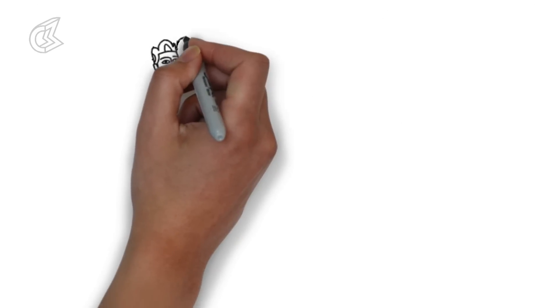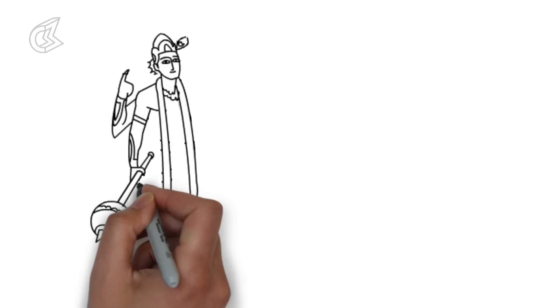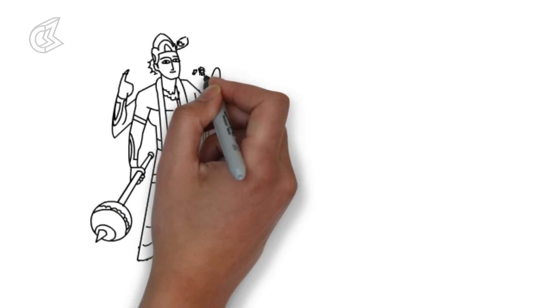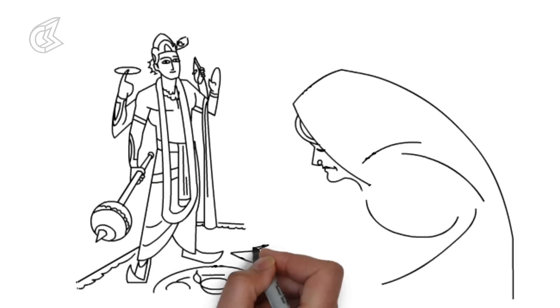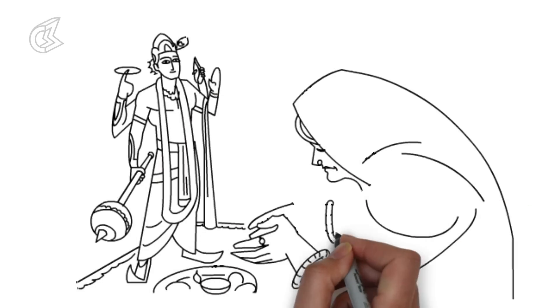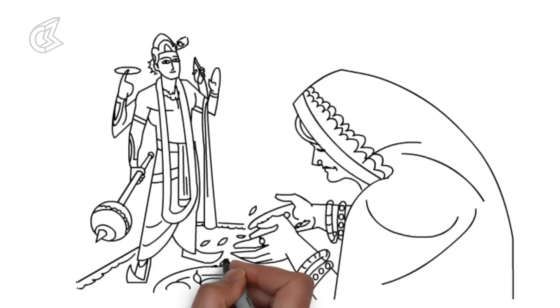The Tulsi plant is regarded as a manifestation of Tulsi, the consort of Vishnu. The leaves of the Tulsi plant are used in the worship of Vishnu and are used to make garlands for him. Planting the Tulsi plant at the entrance of one's home is considered auspicious.